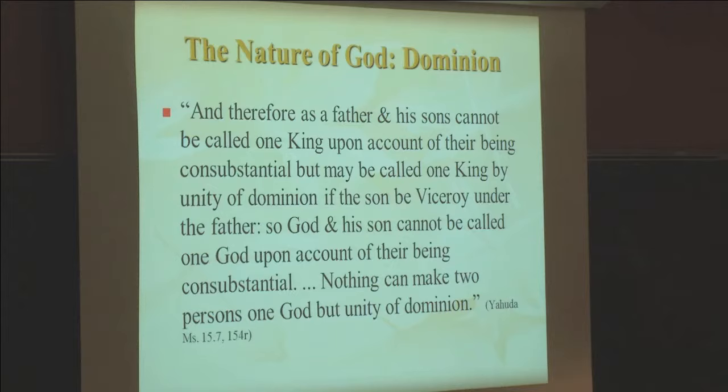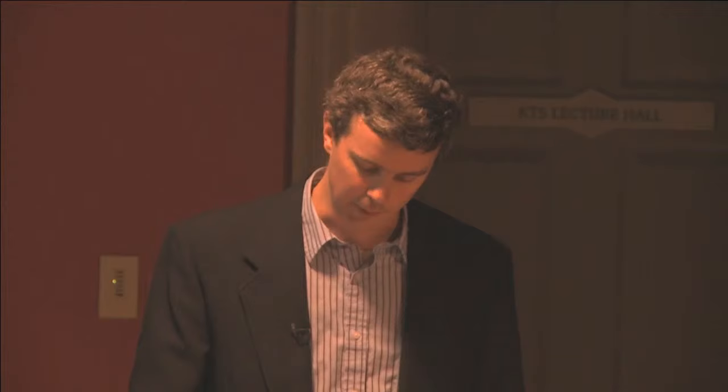Echoing the General Scholium and providing a more detailed context, Newton describes the relationship between Christ and God the Father in his reconstruction of the now-corrupted beliefs of the primitive church: 'As father and his sons cannot be called one king on account of their being consubstantial, but may be called one king by unity of dominion, if the son be viceroy under the father, so God and his son cannot be called one God on account of their being consubstantial. Nothing can make two persons one God but unity of dominion.' I believe that the absence of grace in Newton's system calls into question any claims that he held to predestination, although his view of God's government does appear to fit a voluntarist framework.